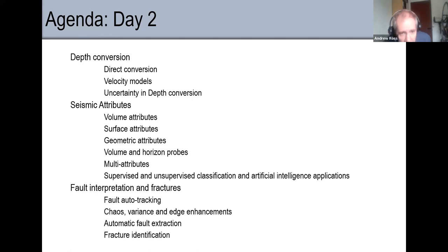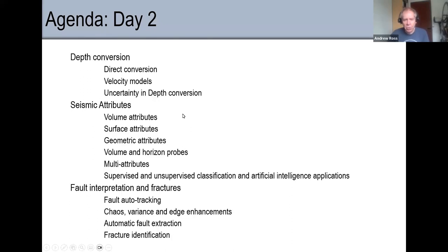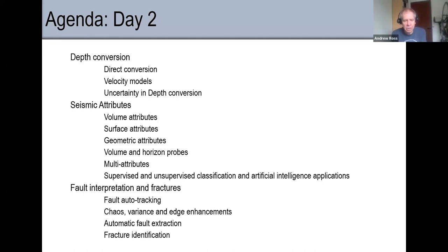Then we talk about attributes — what they are and how we can use them. This is becoming more and more useful because we now have true amplitude seismic. Not so long ago, if I made attributes from seismic data that wasn't true amplitude, my attribute amplitudes weren't correct. When trying to correlate attributes with rock properties, that didn't work very well. Now we've got true amplitude data in almost all cases, so that's going to work better.